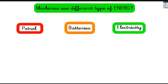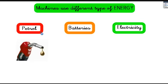We mentioned before that the dishwasher uses electricity, and that the fire engine uses petrol. So these are the main types of energy. The first is petrol — maybe you've seen your parents put petrol in the car. The second is batteries — maybe you have some toys that use batteries.